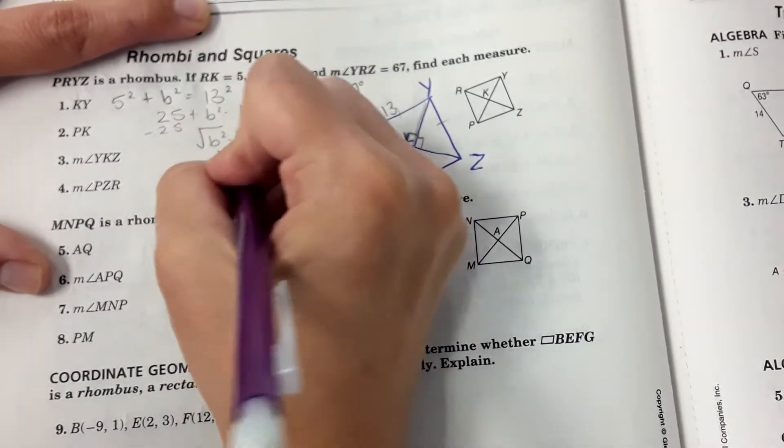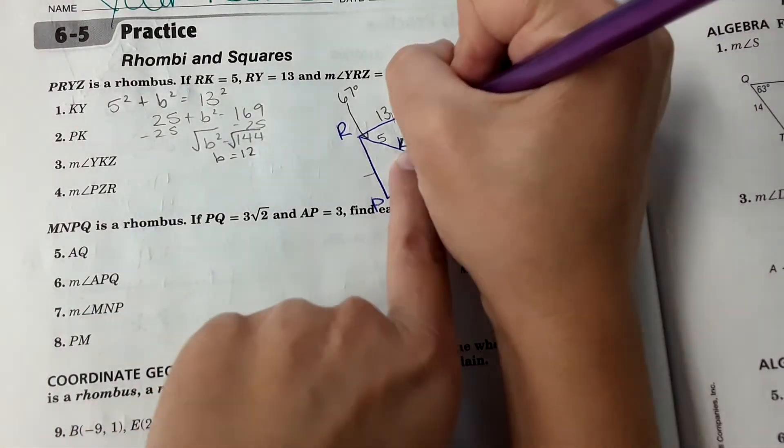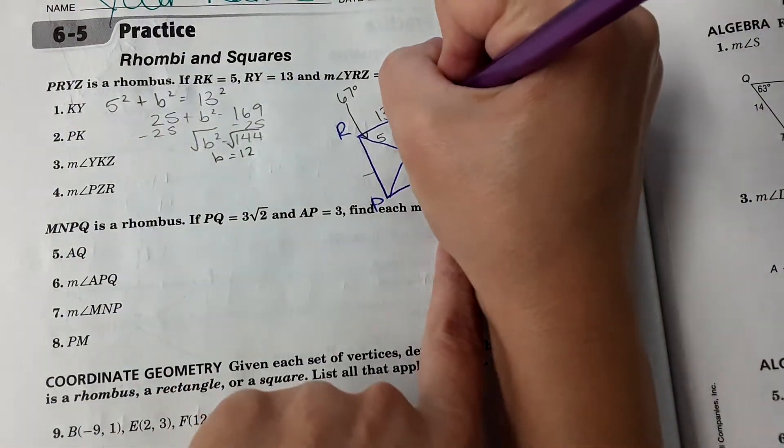And I get B equals 12. So that means this length right here, KY, is 12 units.